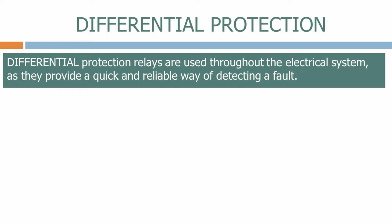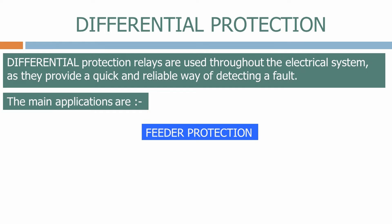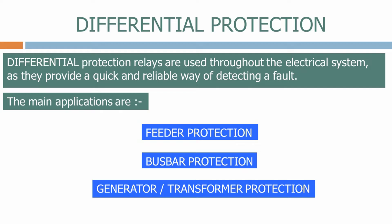Differential protection relays are used throughout the electrical system as they provide a quick and reliable way of detecting a fault. The main applications are feeder protection, busbar protection, and generator or transformer protection.